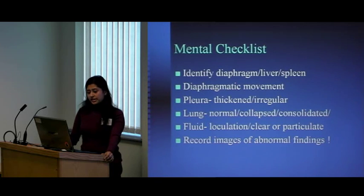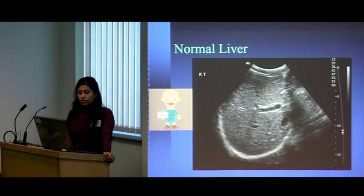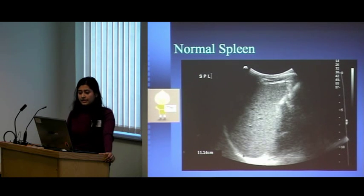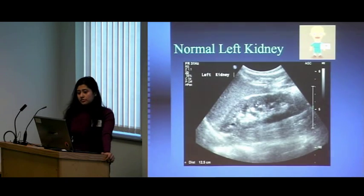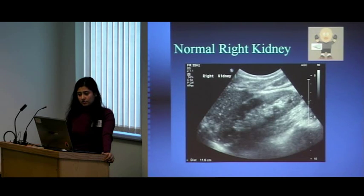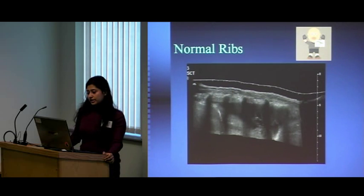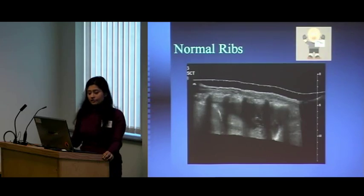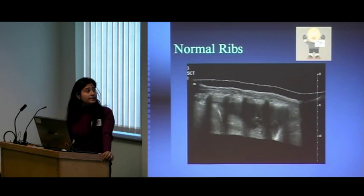Remember to take images of abnormal findings. Here are examples of normal structures: the liver, the normal spleen, the echogenic line of the diaphragm, the normal left kidney and spleen, the normal right kidney, and a panoramic view of the ribs sewn from multiple scans — you can see the ribs with the dark posterior acoustic shadowing behind them.